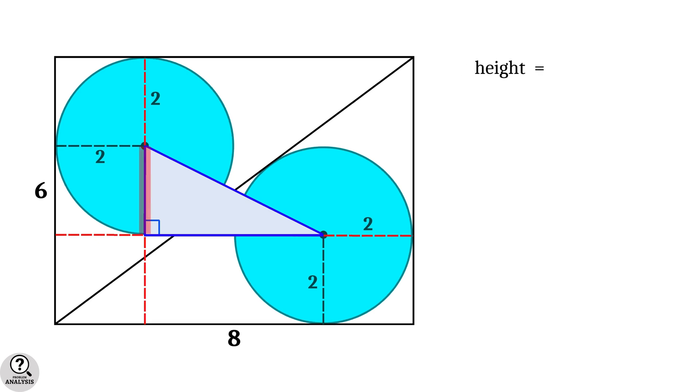The height of this triangle is 6 - 2×2 = 2 units. The base is 8 - 2×2 = 4 units. With base and height established, we can apply the Pythagorean theorem.